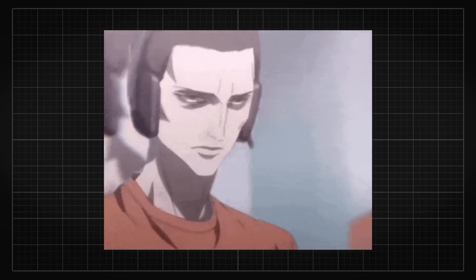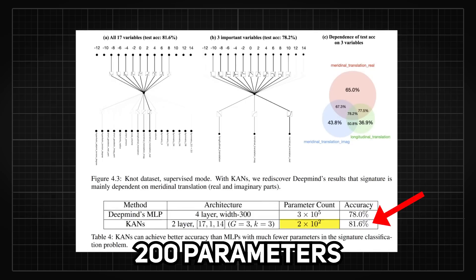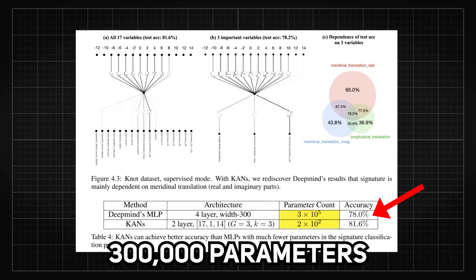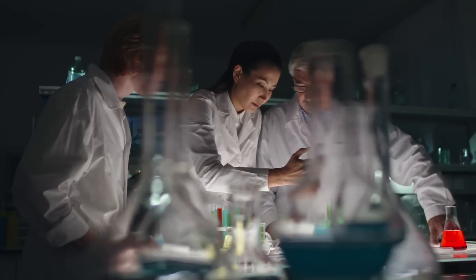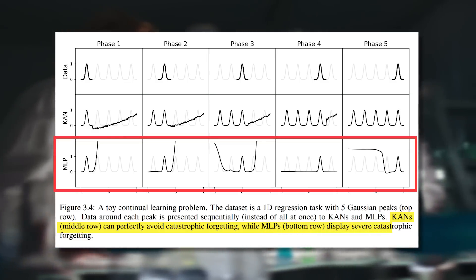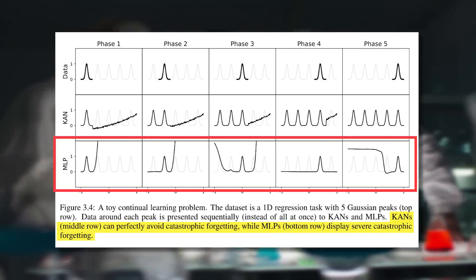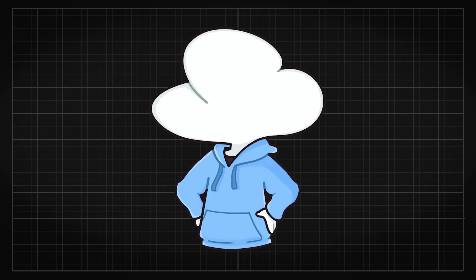So back to what we were talking about: for the mathematical laws in KAT theory, KAN is able to use only 200 parameters to outperform an MLP with 300,000 parameters, which shows that KAN is more parameter efficient — it requires less data and can converge faster than MLP. They also showed in a simple experiment that KAN is able to remember data better, while MLP can forget catastrophically. While they claim the scaling law of KAN is better, the caveat is that it seems easier to overfit.